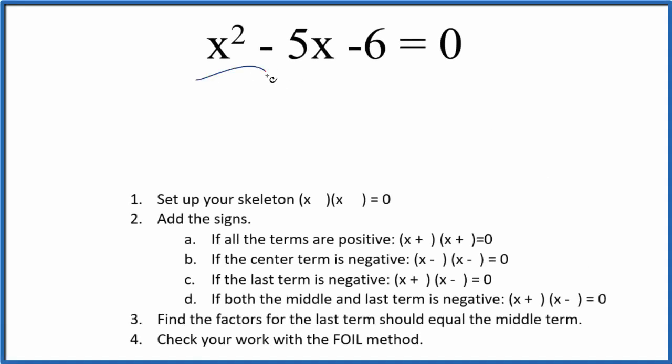Let's factor the equation x squared minus 5x minus 6 equals 0 and we'll use these rules here to factor the equation. First we want to set up a skeleton equation to help guide us here. That'll look like this.